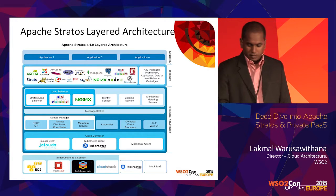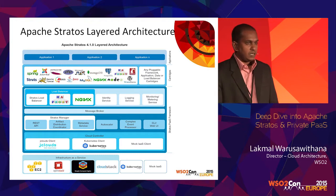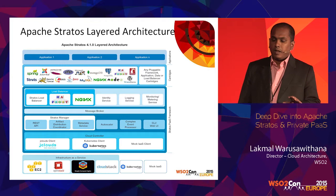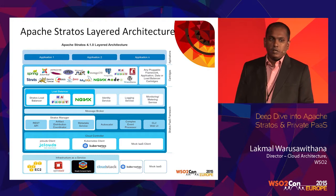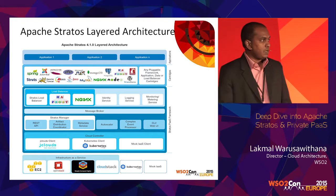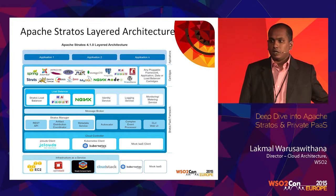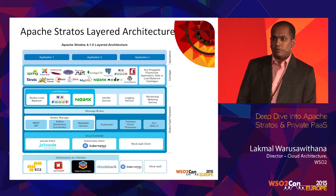In the bottom layer, the previous release only supported infrastructure services like Amazon EC2, OpenStack, CloudStack, and Google Compute Engine. With this release we are adding Docker container support through the Kubernetes project.